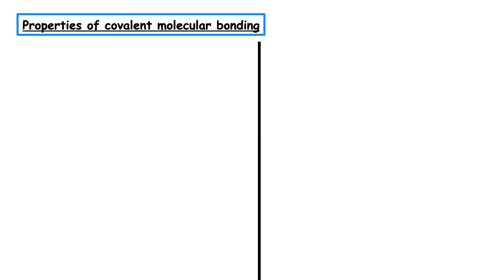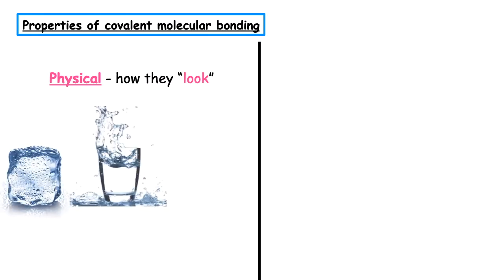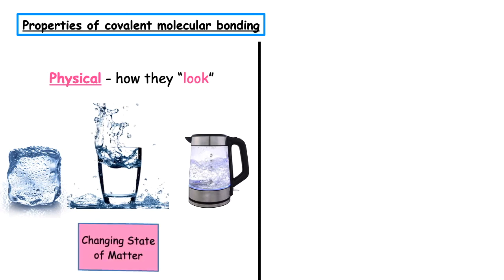The types of elements which make up a compound are not enough to tell us the type of bonding which exists. This is where we have to look at the properties of bonding. We first look at the physical properties of that compound — that's how they look — and what we're focusing on is the state of matter that the compound exists at room temperature.